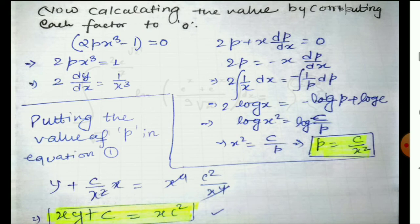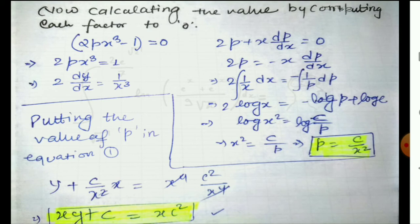Substituting p = c/x² into the given equation: y = cx² + x⁴·(c/x²)² = cx² + c²x⁴. So the solution is y = cx² + c²x⁴. That is the solution to question 1.